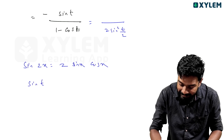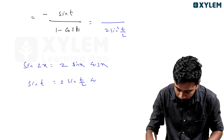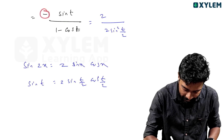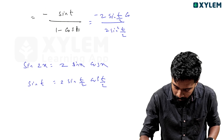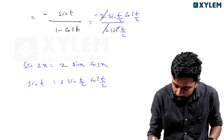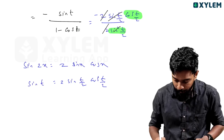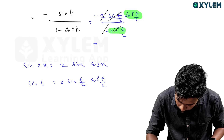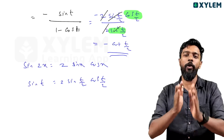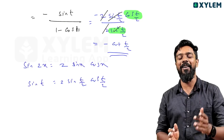So the final simplified answer is −cos(t/2). That's all for this video on parametric differentiation. Comment on the video if you have questions. See you all in the next video — bye!